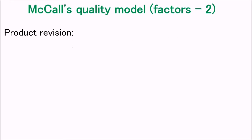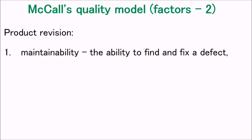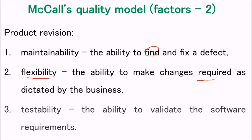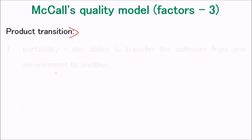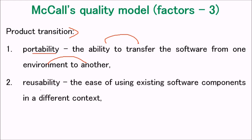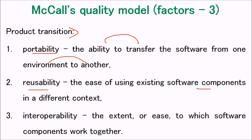Factor 2 is product revision: maintainability refers to how we are able to find and fix defects. Flexibility is the ability to make changes dictated by business needs. Testability is the ability to validate software requirements. Factor 3 is product transition: portability means the ability to transfer software from one environment to another. Reusability is how easily components can be reused in a different context. Interoperability is the ease with which software components work together and are integrated.